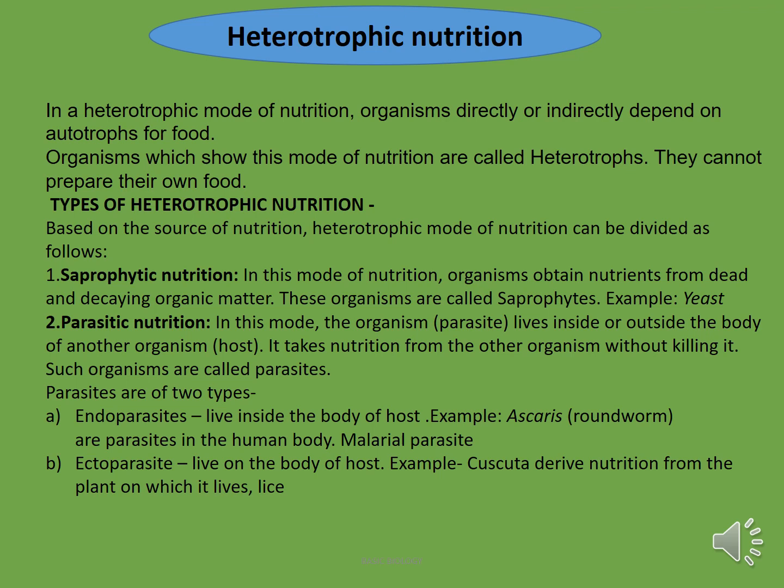The second type is parasitic nutrition. Parasitic nutrition is the mode of nutrition in which organisms live inside or outside the body of another organism. The organism which takes the nutrition is called the parasite, and the organism on which the parasite is dependent is called the host. The parasite takes nutrition from the host without killing it.